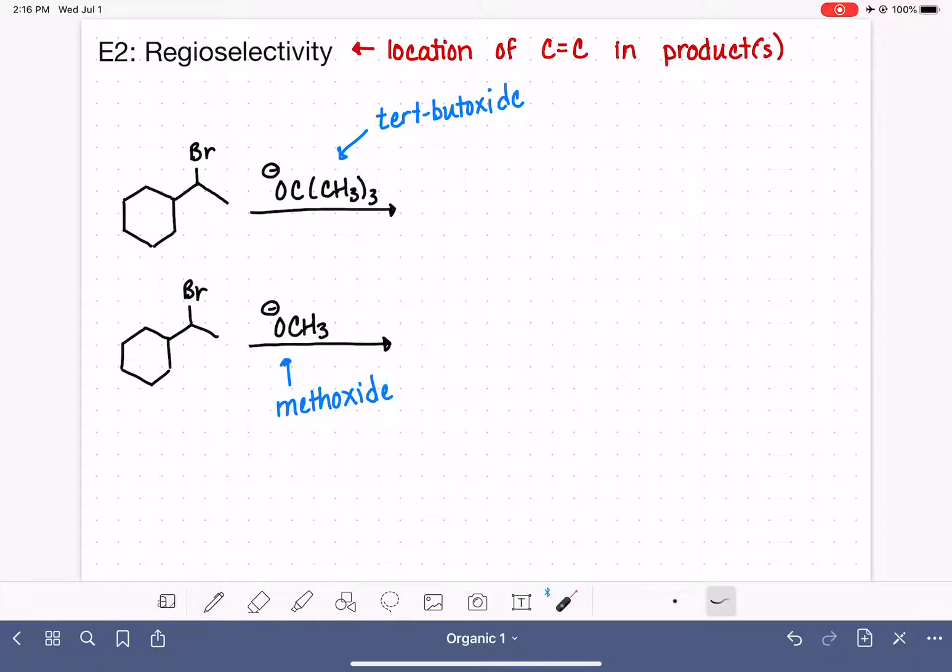So let's start by drawing the potential products of this particular reaction. When we're doing the elimination reaction, we are removing the leaving group from the molecule, and we're also pulling a hydrogen off of an adjacent carbon. So what I've done is highlighted the carbon with the leaving group. I've highlighted the carbons that are adjacent to that carbon with the leaving group, and I'm going to draw the hydrogens in on the adjacent carbon so that we can see which hydrogens are available for this particular reaction.